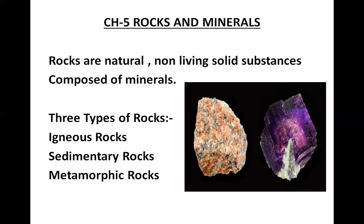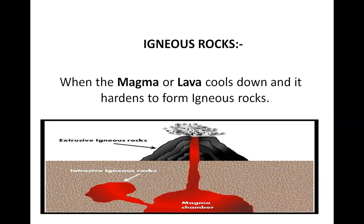In this chapter we are going to learn about three types of rocks: igneous rocks, sedimentary rocks, and metamorphic rocks. Now, what are igneous rocks? Deep inside the earth there are large pockets of hot molten rock called magma. When tremendous pressure causes magma to move upward toward the surface, it is called lava. When this magma or lava cools down and hardens, it forms igneous rock.